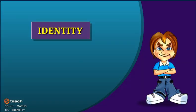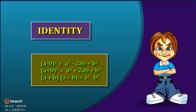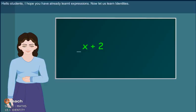Identity: A minus B whole square is equal to A square minus 2AB plus B square. A plus B whole square is equal to A square plus 2AB plus B square. A plus B into A minus B is equal to A square minus B square.